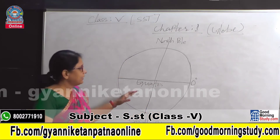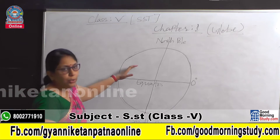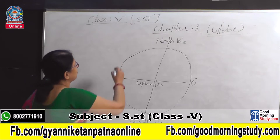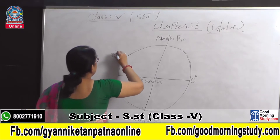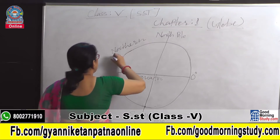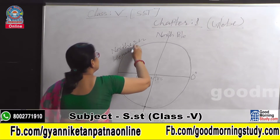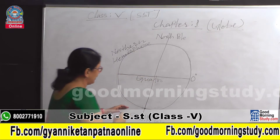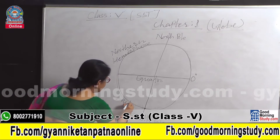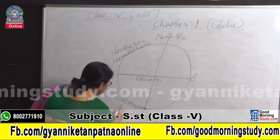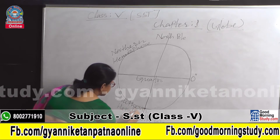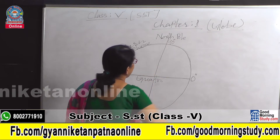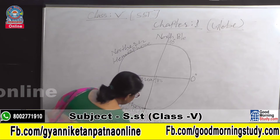The equator divides the Earth into two equal parts. The upper part is called the Northern Hemisphere and the bottom part is called the Southern Hemisphere. The poles indicate 90 degrees — 90 degrees north and 90 degrees south.